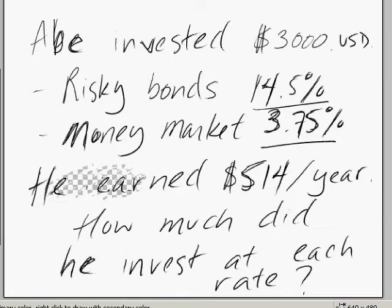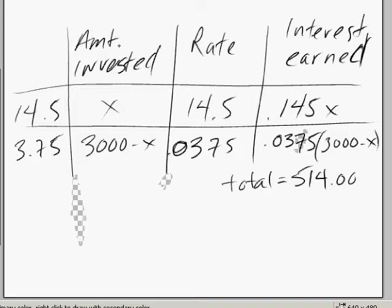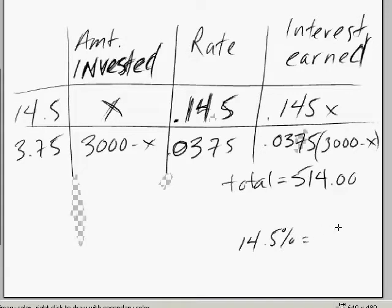So we're going to set up a table that looks like this. Here's the amount invested. And the amount invested, we don't know. We do know the rate though. It's 14.5%, but we need to put the decimal over there. Let's erase this to remove any confusion. So 14.5% looks like this because if you have 14.5%, that equals 14.5 over 100.